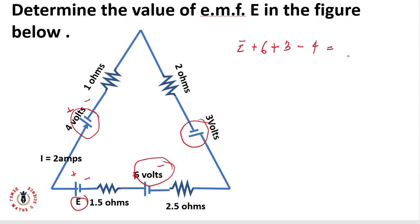This equals I, which is the current in this loop, times the voltage drop across the 1 ohm resistor, plus the 2 ohm resistor, plus the 2.5 ohm resistor, and plus the 1.5 ohm resistor. So E plus 6 plus 3 minus 4, that will be E plus 5, equals I.